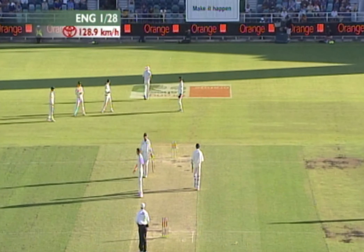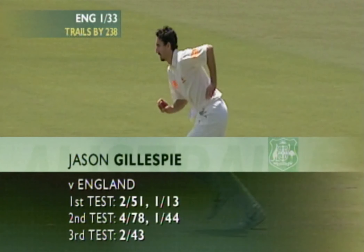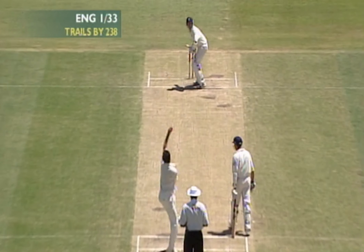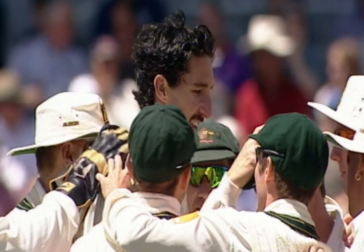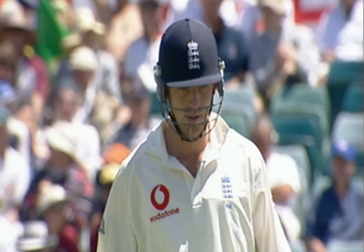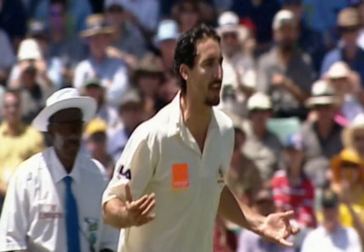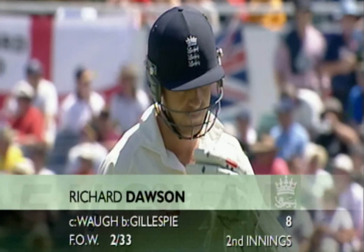Michael Vaughan again showing great strength of character — and Richard Dawson too; he's got a bit about him, this fellow from Yorkshire. The deficit for England is 238 with nine second innings wickets in hand. That one stayed and it's a real worry on the third morning — a grubber. He's gone. Gillespie strikes — it's two for 33. Two previous grubbers set Dawson up; this one was a bit fuller and wider, he went for the cover drive and got an outside edge — a good catch in the gully. Richard Dawson gone for eight. England two for 33.